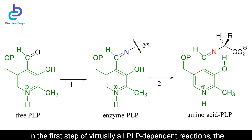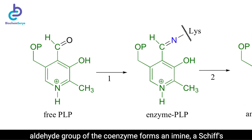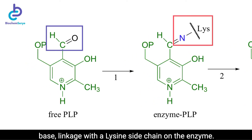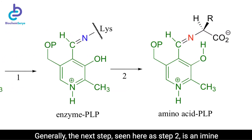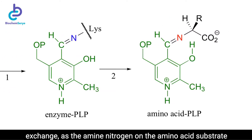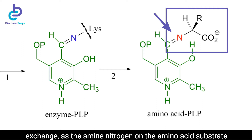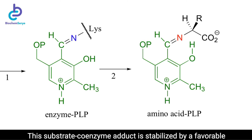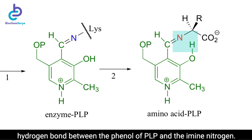The Schiff base intermediate formed by molecular rearrangement determines the type of reaction produced. In the first step of virtually all PLP-dependent reactions, the aldehyde group of the coenzyme forms an imine — a Schiff base — linked with a lysine side chain on the enzyme. The next step is an imine exchange, as the amine nitrogen on the amino acid substrate replaces the enzyme lysine nitrogen in the imine linkage. This substrate-coenzyme adduct is stabilized by a favorable hydrogen bond between the phenol of PLP and the amine nitrogen.